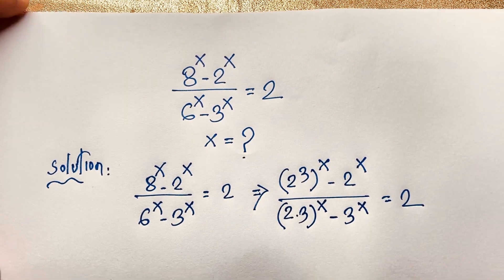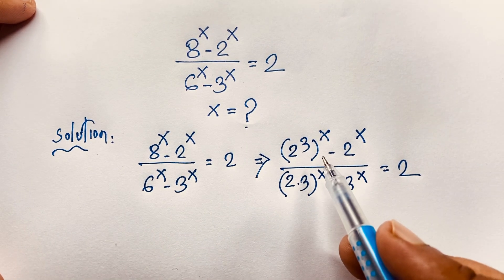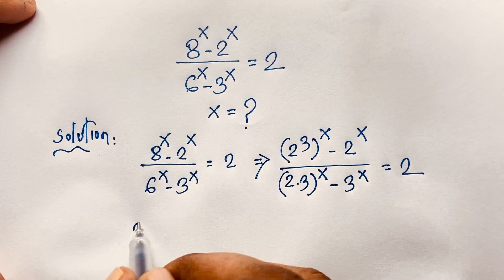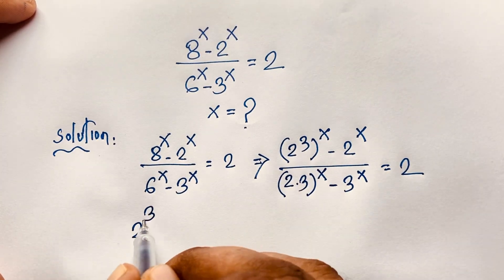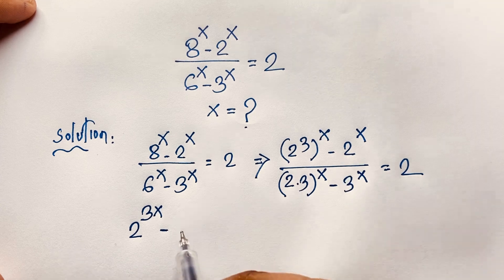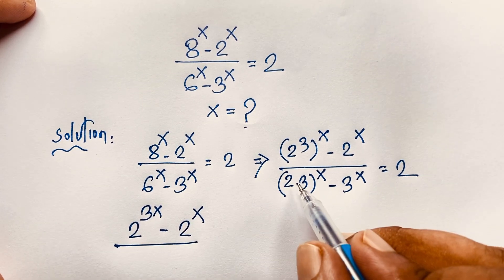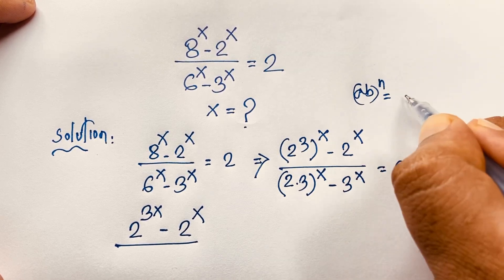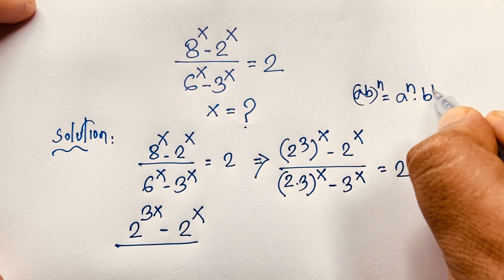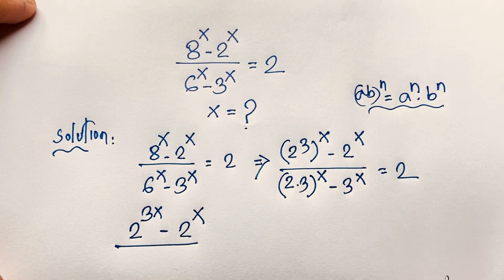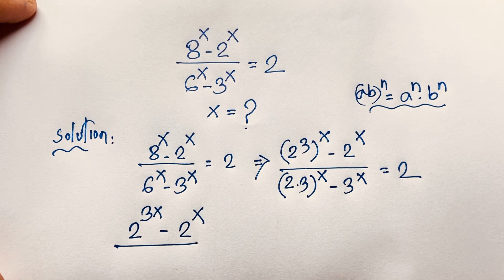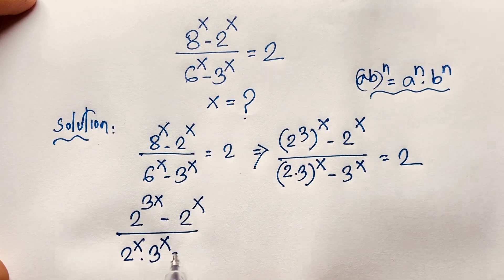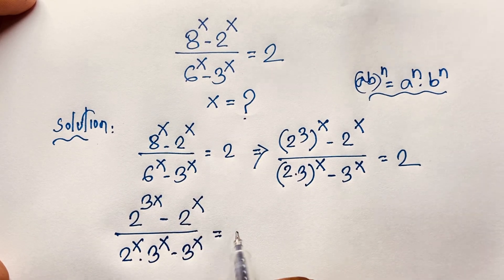According to the exponential formula, 3 times x will be 3x. So you can see here: 2 to the power 3x minus 2 to the power x, over... If I apply the math formula (a·b)^n = a^n · b^n here, it will be 2 to the power of x times 3 to the power of x, minus 3 to the power of x, is equal to 2.